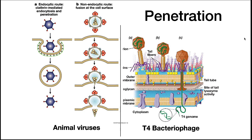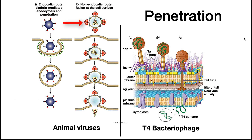Once attached to a cell, a virus then needs to penetrate the cytoplasm. In animal cells, this can follow the endocytotic pathway where the virus migrates to a clathrin-coated pit after being bound by a receptor. The cell then envelops the virus in an endosome. The endosome's acidification often causes a change in outer viral proteins that cause fusion with the membrane, resulting in the release of viral nucleic acid into the cytoplasm. Other viruses will fuse directly with the host cell membrane after binding their receptor, bypassing the endosome.